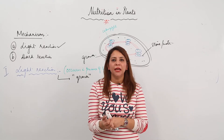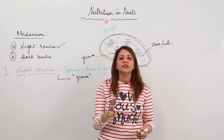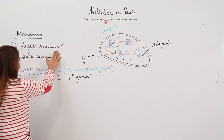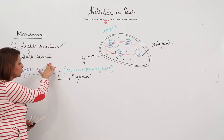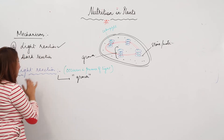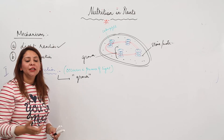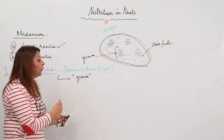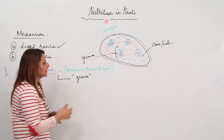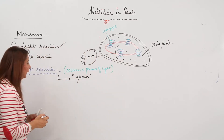We are going to start with the mechanism of photosynthesis, which involves basically two types of reactions: one is the light reaction and the other is the dark reaction. We are going to start with the first kind, that is the light reaction. As the name suggests, it occurs in the presence of light, so it takes place where the light-capturing part is present — that is the chlorophyll — so they are occurring in the grana.